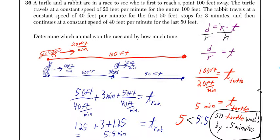Yo, what's up? A turtle and a rabbit are in a race to see who is first to reach a point 100 feet away. The turtle travels at a constant speed of 20 feet per minute for the entire 100 feet. The rabbit travels at a constant speed of 40 feet per minute for the first 50 feet, stops for 3 minutes, and then continues at a constant speed of 40 feet per minute for the last 50 feet.